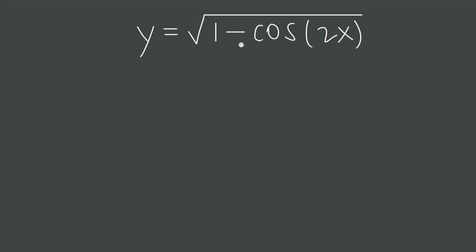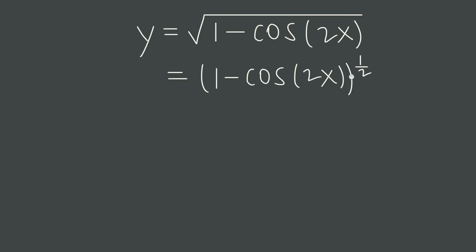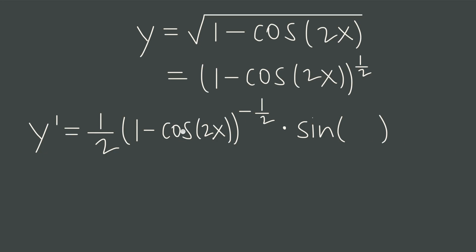This outside-inside pattern is universal, so let's look at it with some other types of functions. Here we have the square root of 1 minus cosine of 2x. If we rewrite the square root as the one-half power, our function looks just like the previous one. Whenever you have a root, write it as a fractional exponent. The inside function is 1 minus cosine of 2x and the outside function is something raised to the one-half power. The derivative brings that one-half down in front and subtracts 1 from the exponent, giving a negative one-half. So we differentiate the outside function, leaving the inside function completely untouched, then multiply by the derivative of the inside.